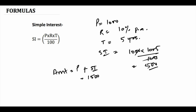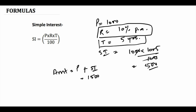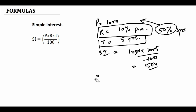The principal value was 1000 and simple interest is 500, so the total amount at the end of five years is 1500. You can also calculate this by cumulatively calculating the rate of interest. Since it is simple interest, 10 percent per annum for five years gives 50 percent, and 50 percent of 1000 is 500, so the simple interest is 500 through the cumulative simple interest method.